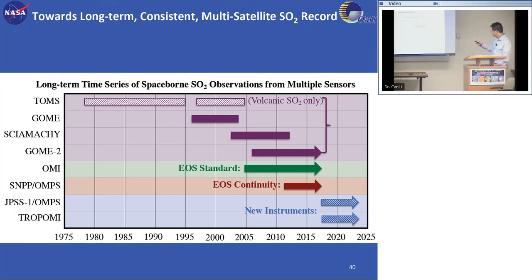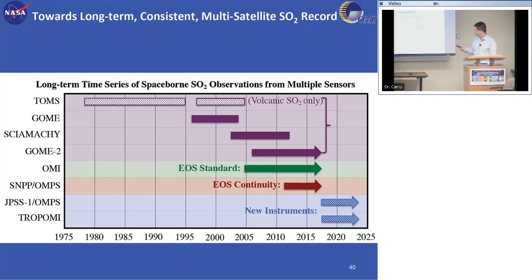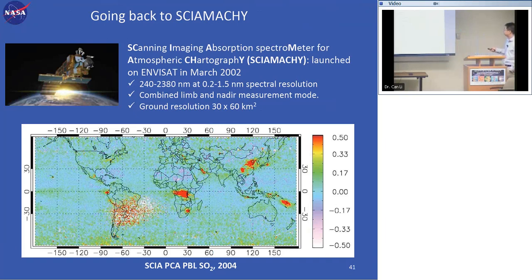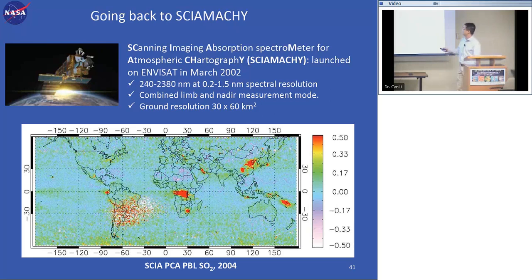We are looking at extending our data record using other sensors. Going back to SCIAMACHY, launched in 2002 with ground resolution comparable to SUOMI-NPP VIIRS but only global coverage once every six days, our preliminary boundary layer SO2 retrievals for 2004 look quite similar to our OMI and VIIRS maps, showing pollution over eastern China, the Persian Gulf, South Africa, eastern US, Mexico City, and Kilauea. Going further back to GOME, launched in 1995 with a very coarse resolution of 40×320 km and global coverage once every three days, we can still retrieve SO2 and see sources in eastern China, eastern US, and South Africa from 1997.